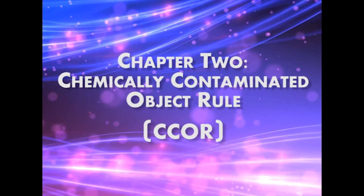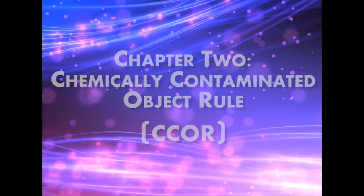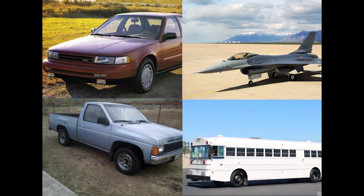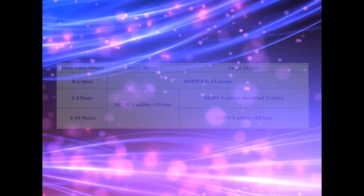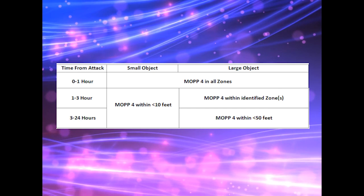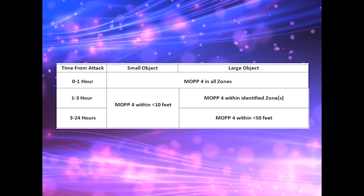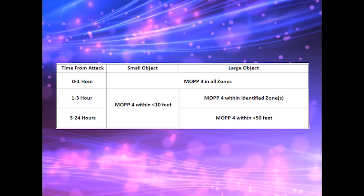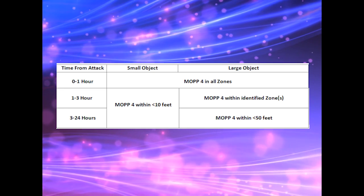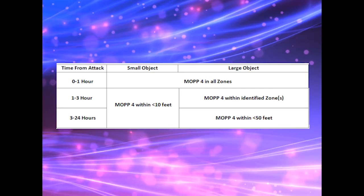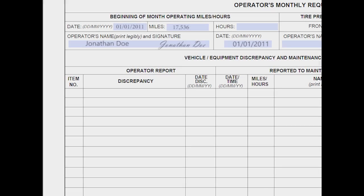Various assets may become contaminated during an enemy attack. Assets with metal surfaces and non-porous surfaces such as glass or hard plastic may retain a residual chemical hazard post-attack. The Chemically Contaminated Object Rule is used to keep personnel safe while using the contaminated asset. How personnel cordon off the contaminated vehicle or object will depend on its size and the duration in which the object has been contaminated. Report all contaminated vehicles to your UCC with vehicle-specific information and type of contamination.